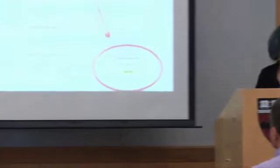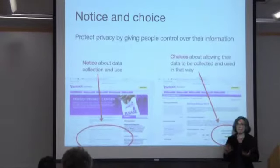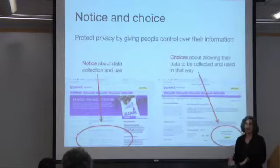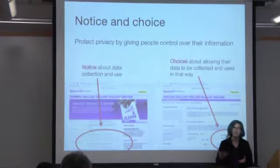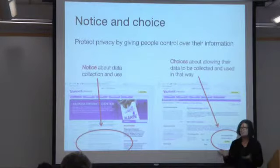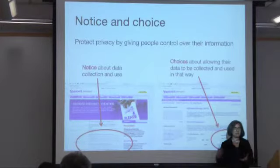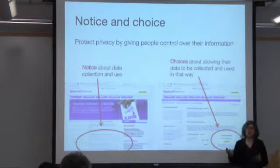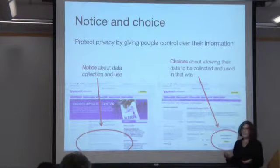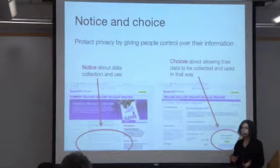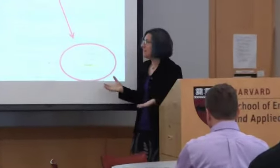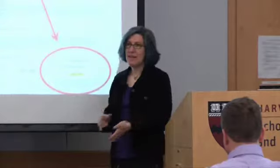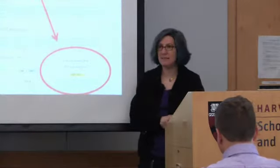What is notice and choice? The idea is that if a company gives you notice about what data they collect and what they do with it, and they give you some choices about whether they're going to do those things, then your privacy is protected. There's a lot of disagreement about whether that's sufficient. Many argue you should have a fundamental right to privacy, and if somebody says 'I am going to invade your privacy,' that should be against the law. But in the U.S., except in specific sectors, somebody can say 'I'm going to invade your privacy,' and as long as they've given you notice, they can go right ahead and do that.